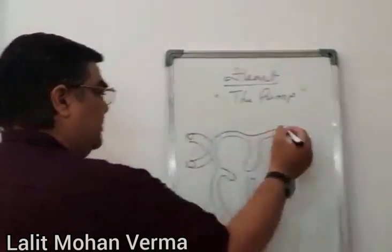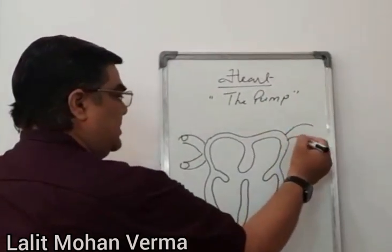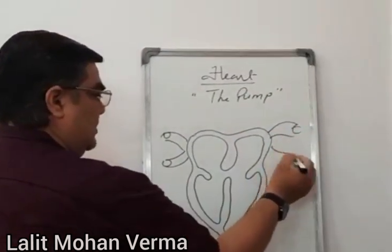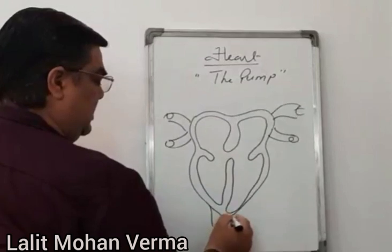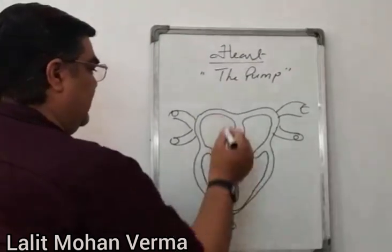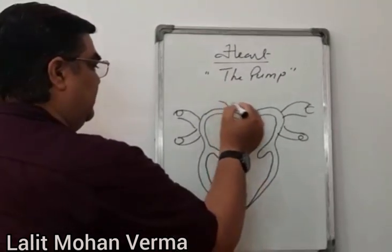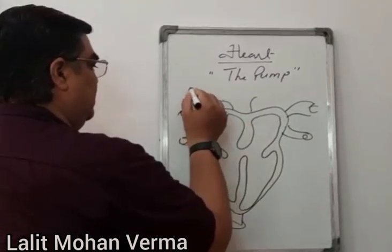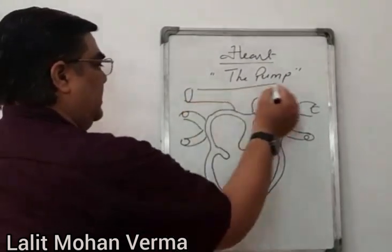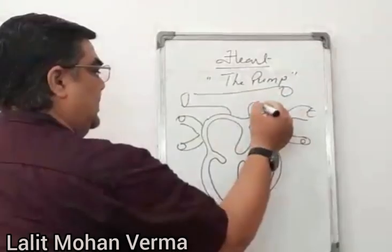The major vessels include the pre-caval, post-caval, inferior vena cava, and the aorta.